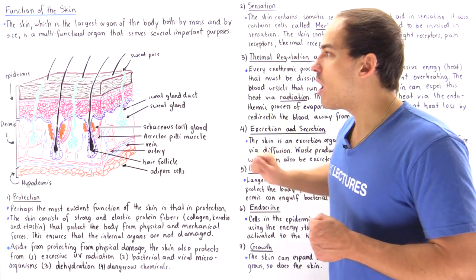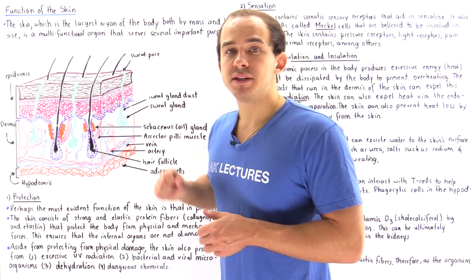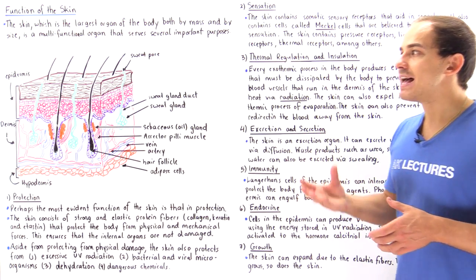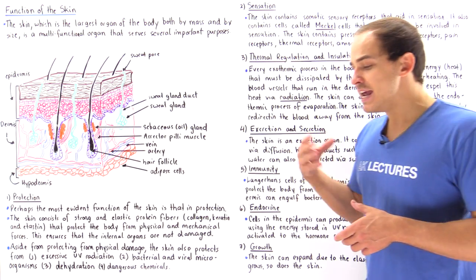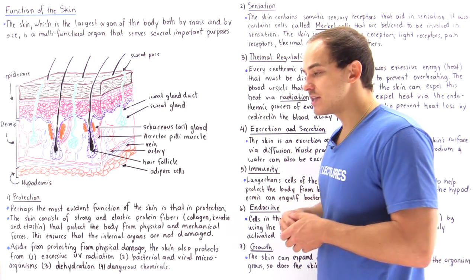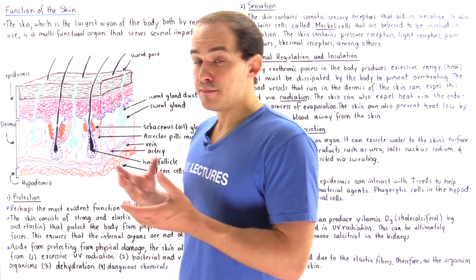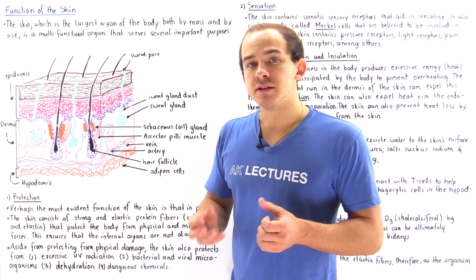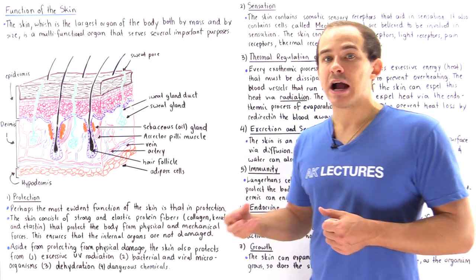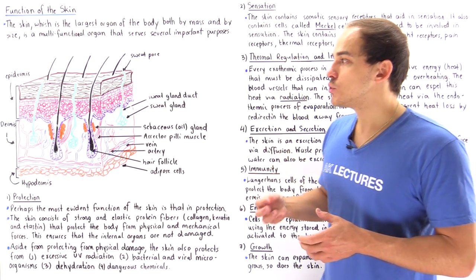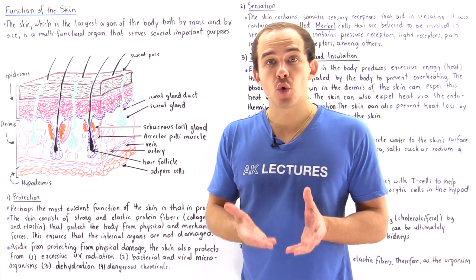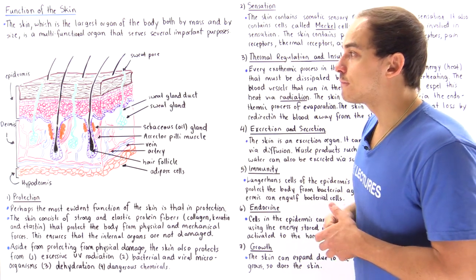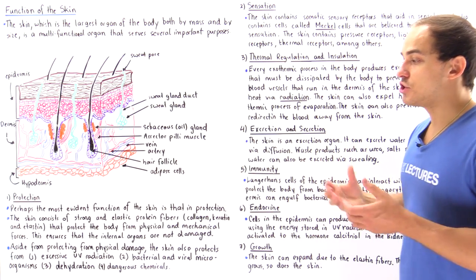That's exactly why the epidermis contains specialized cells known as melanocytes. Melanocytes release a pigment known as melanin, which not only gives us our skin color but also absorbs some of that UV radiation, protecting our skin from damage.